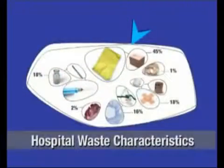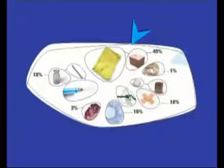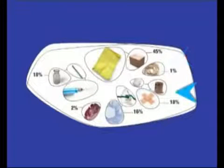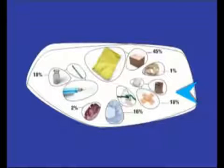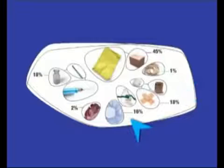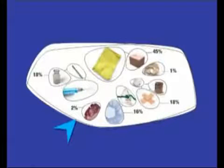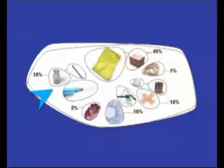Normal medical waste is composed of 45% dry cellulose — paper, packets, and pulp — 1% silicon and rubber, 8% humid cellulose such as absorbents and medications, 16% polyolefinic plastics such as tubes, boxes, fabrics, and masks, 2% pathological waste, and 18% non-combustible materials such as glass, syringes, needles, and scalpels.